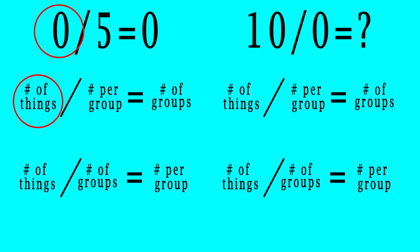We can start with 0 things and put 5 of them into each group, ending up with 0 groups. Or we can start with 0 things and put them into 5 equal groups with 0 in each. What we cannot do is start with 10 things and put 0 in each group, no matter how many groups we have. Nor can we start with 10 things and equally divide them into 0 groups, no matter how few are in each group.